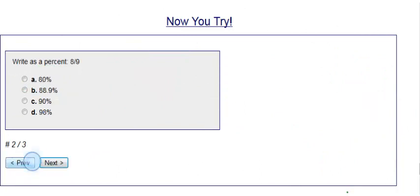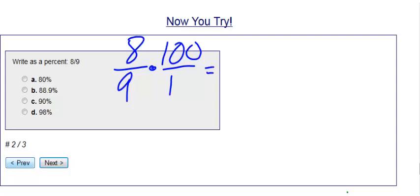Number 2, we have 8/9, so 8 over 9 times 100 over 1. We can't simplify this at all, so now what I'm going to do is multiply across.